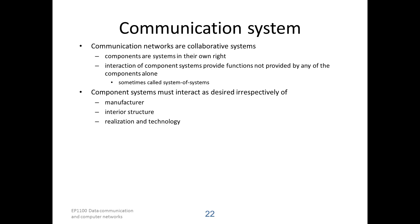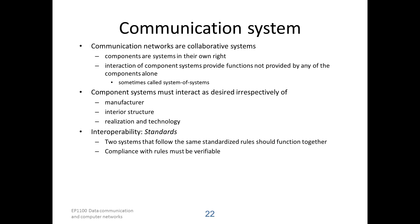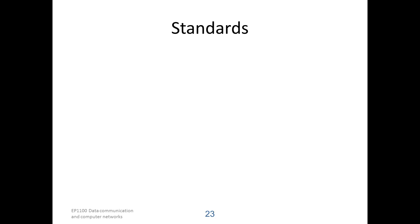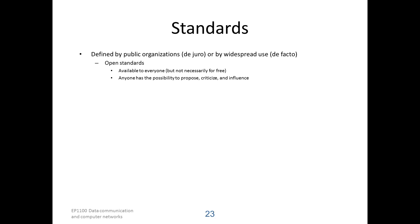For instance, computers from different manufacturers, based on different processors and running different operating systems, should be able to communicate together. This interoperability is ensured by standards. We require that two systems that follow the same standardized rules should function together. It's also important that the rules can be verified by the manufacturer, so that it knows its system will function together with all other systems manufactured by others. Standards are defined by public organizations, referred to as de jure standards, or by widespread use, called de facto standards. We talk about open standards, which means that the standard specifications are public, and that the standardization process is open to anyone with the possibility to propose, criticise, and influence the standards.